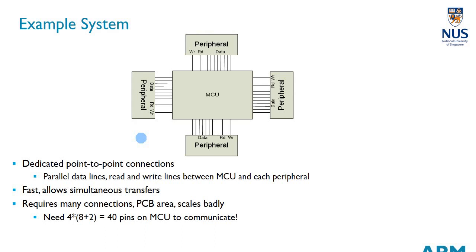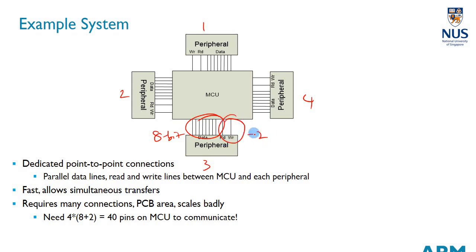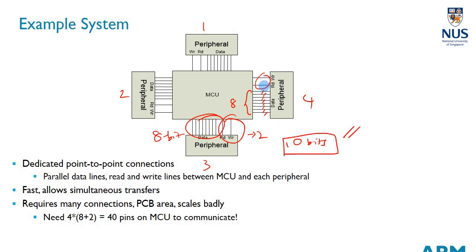Imagine a microcontroller wants to talk to four different devices. Each device has an 8-bit data bus plus two control signals, totaling 10 bits per device. In parallel communication, I have 8 lines for data and 2 control lines for each device. So if one peripheral wanted 32-bit parallel communication, I would need 34 lines — 32 data plus 2 control — just for that one device.